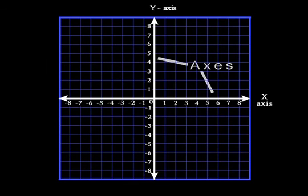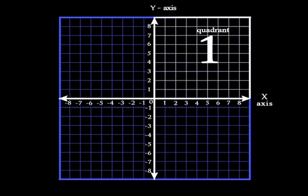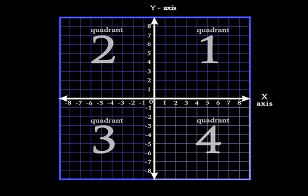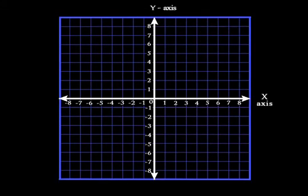These axes make four quadrants which are numbered 1, 2, 3, 4. Where the lines meet is called the origin.